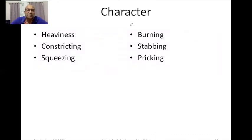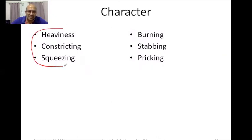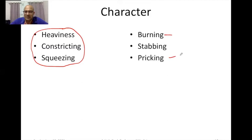The next question is: what is the character of this pain? The patient may describe heaviness, constricting pain, or squeezing pain — these are typical and characteristic of angina. There could be burning pain, stabbing or pricking pain, which point to other etiologies. A burning pain makes you think of esophagitis. A stabbing or pricking pain suggests a pleural etiology. A stabbing, deep, sharp pain makes you think of aortic dissection. Depending on the character of pain, a lot can be decided about the origin.